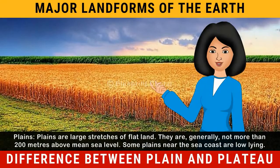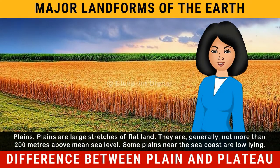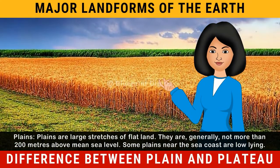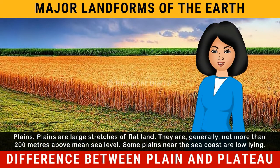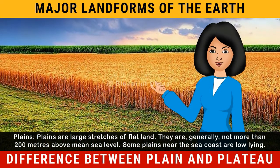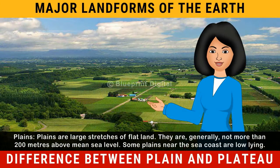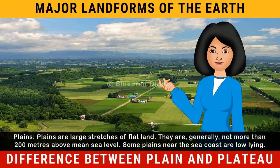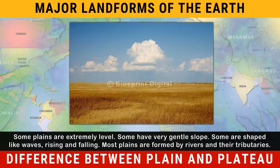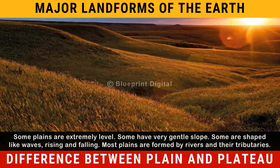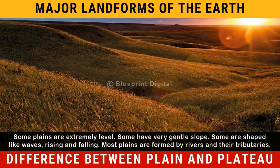Plains are large stretches of flat land. They are generally not more than 200 meters above mean sea level. Some plains near the seacoast are low-lying. Some plains are extremely level, some have a very gentle slope, and some are shaped like waves, rising and falling.